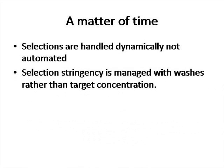This is why our selections take longer. Selection must be handled dynamically, not in an automatic process, in order to manage stringency as optimally as possible. Selection in this way has a lower risk of failure but takes longer than automated selections. Selection stringency is managed with washes rather than target concentration.